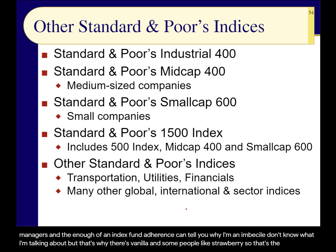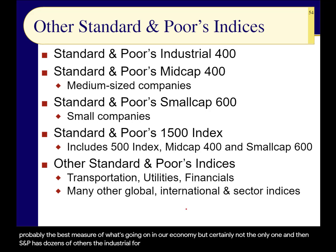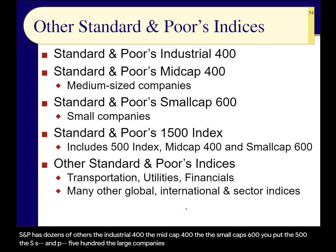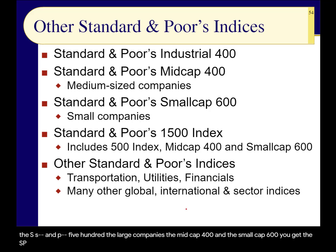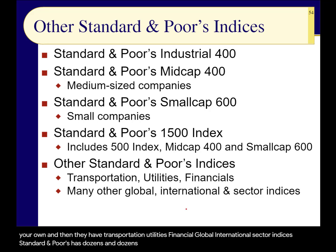So that's the S&P 500 — probably the best measure of what's going on in our economy, but certainly not the only one. S&P has dozens of others: the Industrial 400, the Mid-Cap 400, the Small-Cap 600. Put the S&P 500 large companies together with the Mid-Cap 400 and the Small-Cap 600, and you get the S&P 1500 index. S&P also has transportation, utilities, financial, global, and international sector indices — dozens and dozens of them.